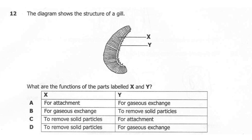Question 12. The diagram shows the structure of a gill. What are the functions of the parts labeled X and Y? A: X for attachment, Y for gaseous exchange. B: X for gaseous exchange, Y for removal of solid particles. C: X for removal of solid particles, Y for attachment. D: X for removal of solid particles, Y for gaseous exchange. So what is the correct answer? Is it A, B, C, or D?